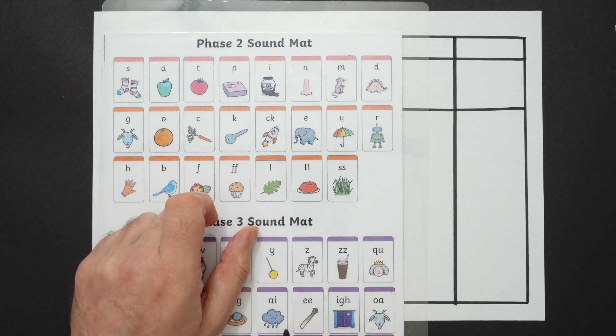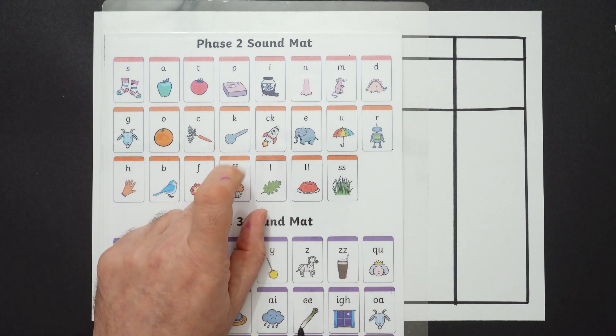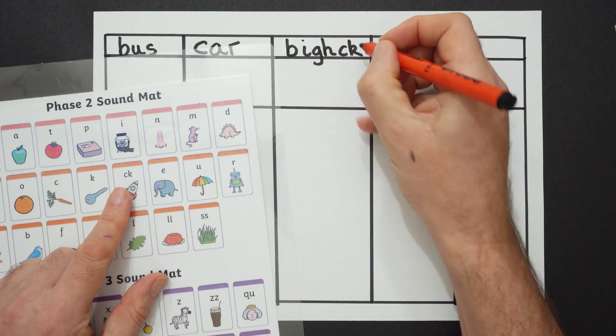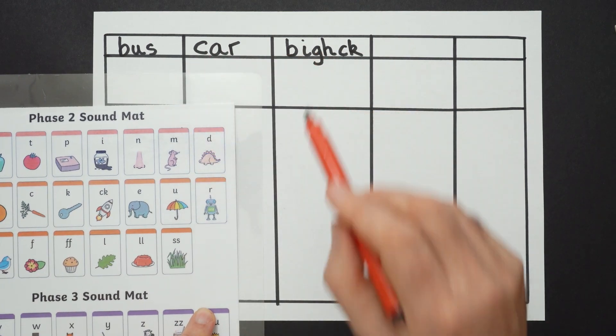Now, which comes at the end of the word? This one, this one, or this one? It's a C and the K. Two letters make one sound. Now let me check it. Bike. Bus, car, bike.